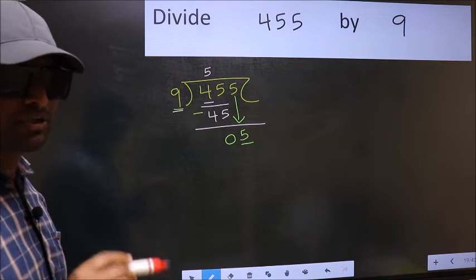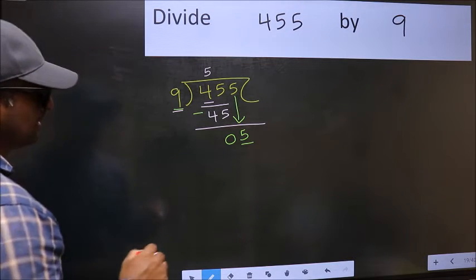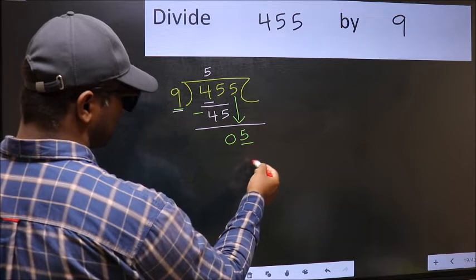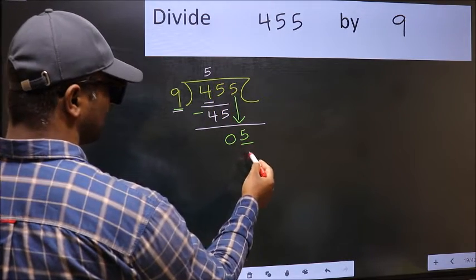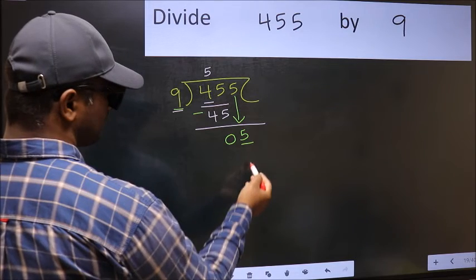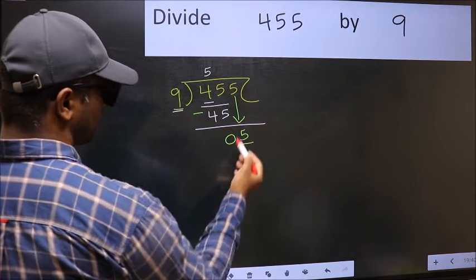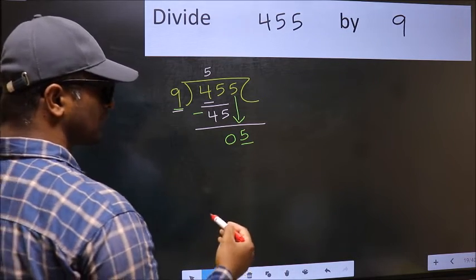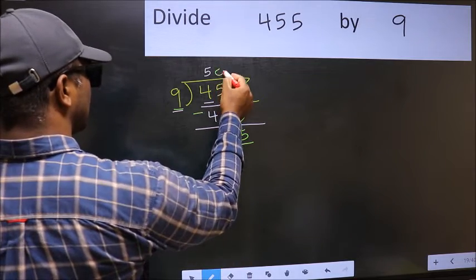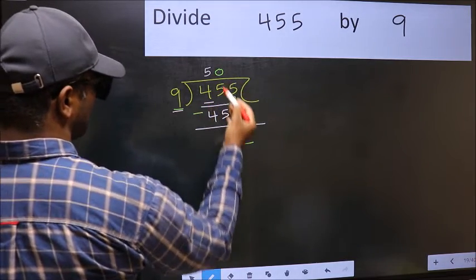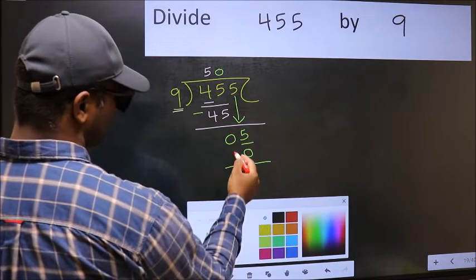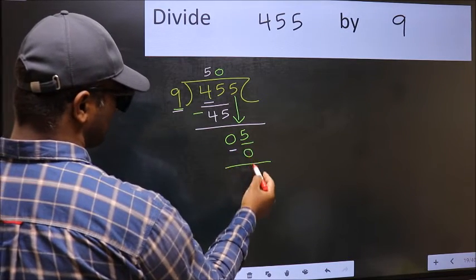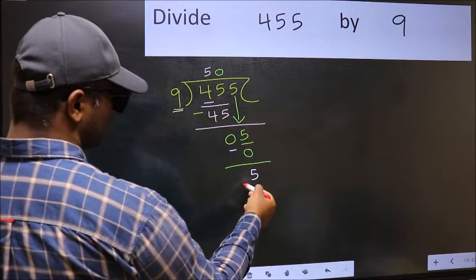Instead, what you should think of doing is, which number should we take here. If I take 1, we will get 9, but 9 is larger than 5. So what we should do is, we should take 0. So 9 into 0, 0. Now you should subtract. 5 minus 0, 5.